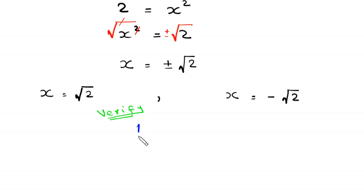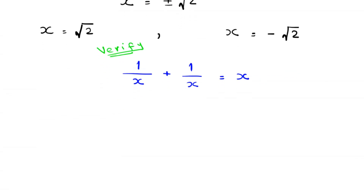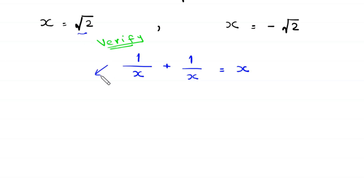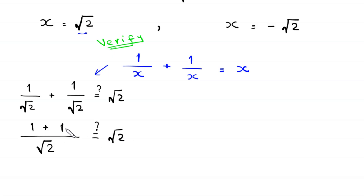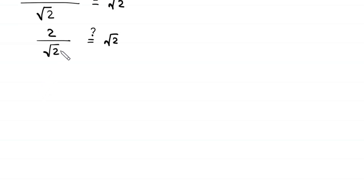To verify, we use the original equation: 1 over x plus 1 over x is equal to x. When x is equal to root 2, this equation becomes 1 over root 2 plus 1 over root 2 is equal to root 2. We take the LCM of root 2 and root 2 — the LCM is root 2. So 1 plus 1 over root 2 equals root 2, giving us 2 divided by root 2, which should equal root 2.